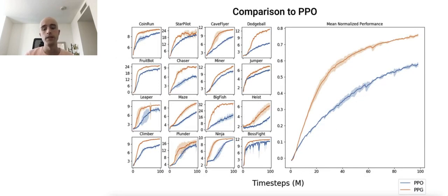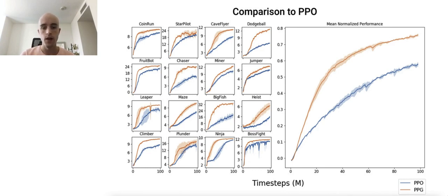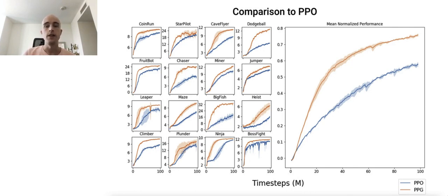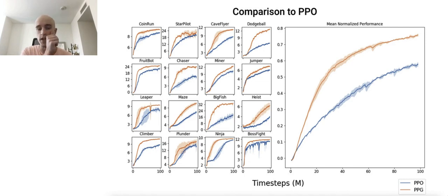This graph unpacks the performance comparison between the two algorithms. The left-hand graphs show the performance of each agent on the 16 individual environments in ProcGen Benchmark. The right graph shows the mean normalized score across all these environments, where each environment contributes equal weight. What we can see here is that the performance improvement of PPG is really quite consistent across all these environments — in pretty much every environment, PPG is significantly outperforming PPO. This level of consistency is worth mentioning, and not something we always see when evaluating different RL algorithms.